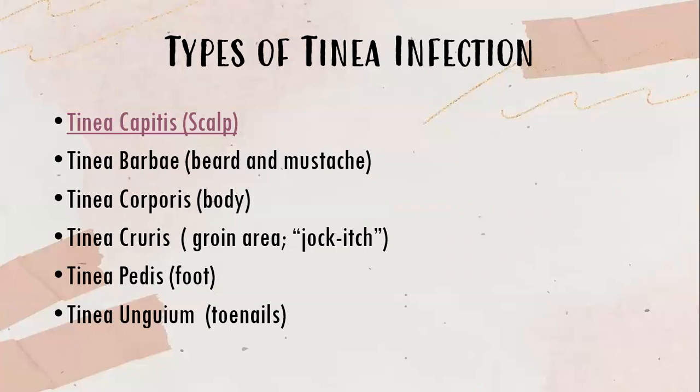Tinea infections are named depending on their location in the body. The types include tinea capitis affecting the scalp, tinea barbae affecting the beard and mustache, tinea corporis affecting the body, tinea cruris in the groin area also known as jock itch, tinea pedis affecting the foot, and tinea unguium affecting the toenails.